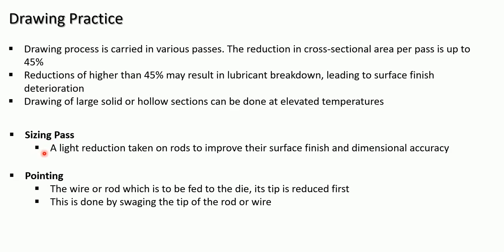After the sizing pass, pointing on that material is done. What is pointing? The wire or rod which is to be fed to the die has its tip reduced first. The tip or end of the material to be fed to the draw die has its cross sectional area reduced, forming a tip — that formation of tip is called pointing. This is done by swaging the tip of the rod or wire.